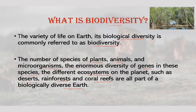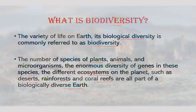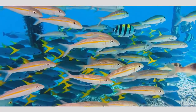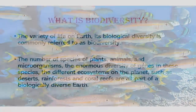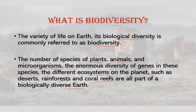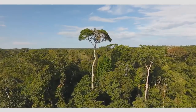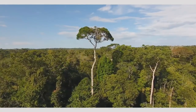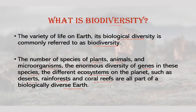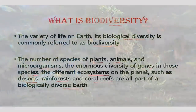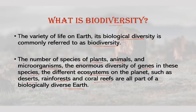If we talk about terrestrial biodiversity, it is usually greater near the equator, which is the result of the warm climate and high primary productivity there. Biodiversity is not distributed evenly on earth and is richest in the tropical areas. These tropical forest ecosystems cover less than 10% of earth's surface and contain about 90% of world's species. Marine biodiversity is usually highest along coasts in the western Pacific where sea surface temperature is highest.